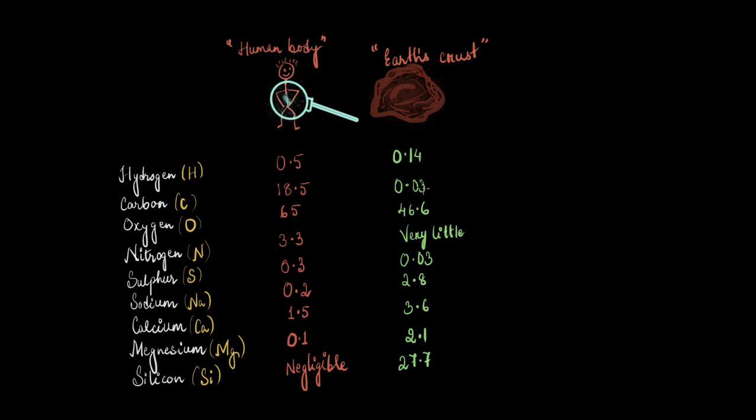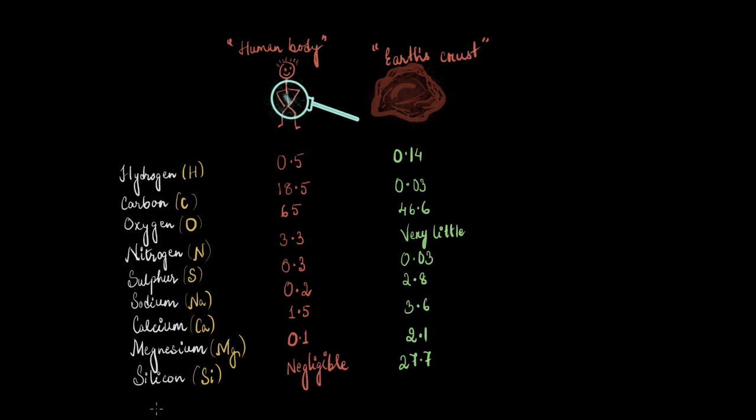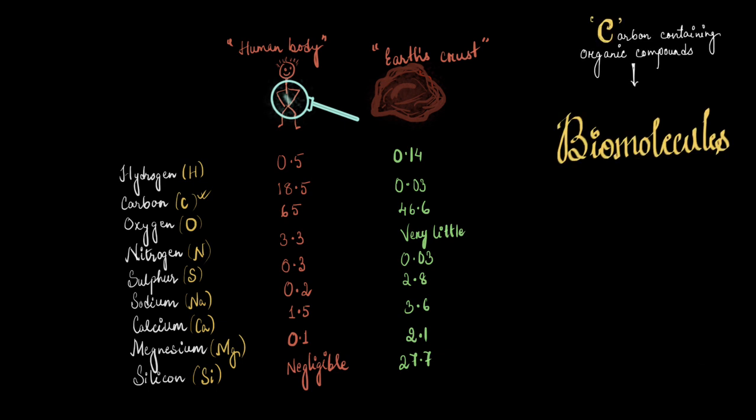Don't you think it's surprising and weird at the same time? I find it difficult to even think that the ingredients that make me and the ingredients that make up this lifeless earth's crust is the same. Well, it was found that it's all the magic of the compounds that are formed out of these lifeless elements inside living cells. Organic compounds that contain carbon. That's the magic. They form something called the biomolecules.